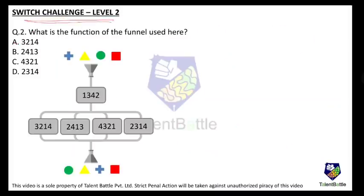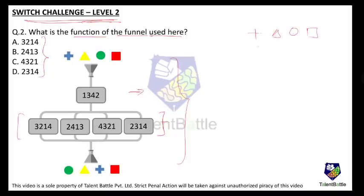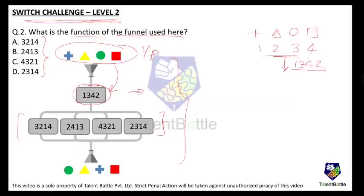In Level 2 of the Switch Challenge it becomes a little more difficult — there are two levels of funnels. The options here are based on the second level of the funnel. I'll draw the diagram: plus, triangle, circle, and square, assigned numbers 1, 2, 3, and 4. The input is subjected to the first function 1 3 4 2, so the shapes get rearranged: 1st comes plus, then circle (3), then square (4), then triangle (2).